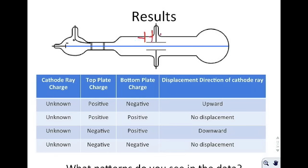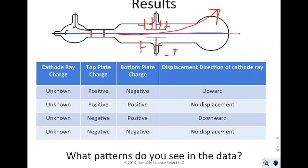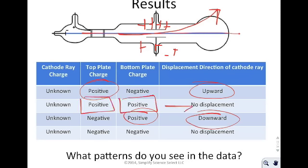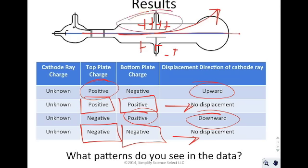The cathode ray was unknown. But he noticed that when it came close to the positive plate — with the bottom plate negative — it was deflected upward. When both plates were positive, it stayed in the same direction. When the configuration was negative and positive, it was directed downward. The pattern you should see is that it was always attracted towards the positive plate. If there were two positive plates, there was no effect, and if there were two negative plates, there was no effect. So this cathode ray was always moved towards the positive plate.